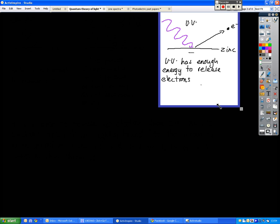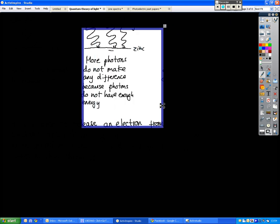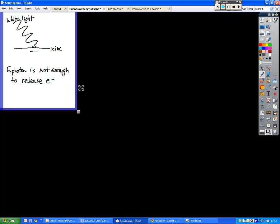So if we kind of relate that to an experiment that we've already done, the photoelectric effect, you know with the gold leaf electroscope, we shone white light onto a zinc surface. And the energy of that photon was not enough to release an electron.